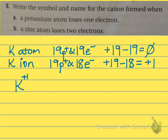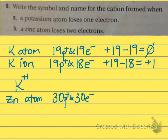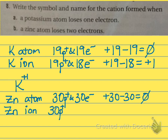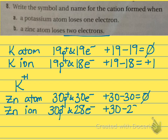For letter B, a zinc atom loses two electrons. Zinc has atomic number 30, so it has 30 protons and 30 electrons, giving a charge of zero. When zinc becomes an ion, it still has 30 protons, but loses two electrons, so it now has 28 electrons. Plus 30 minus 28 gives a charge of plus 2, so we write it Zn with a charge of plus 2. It doesn't matter whether you write the plus sign or the number first.